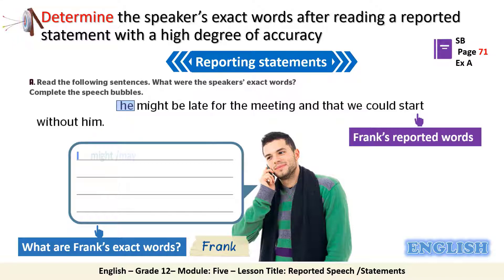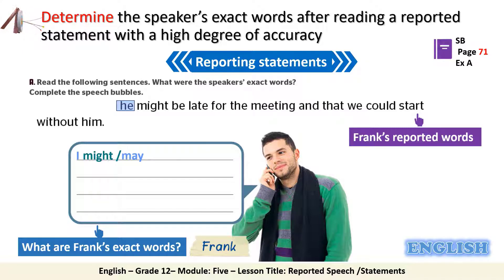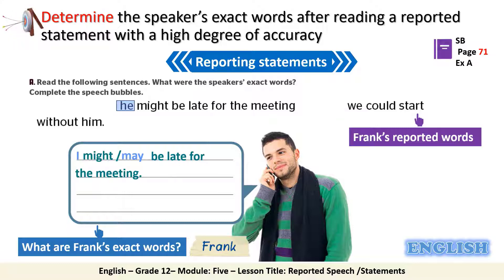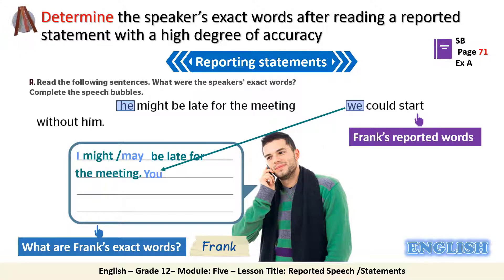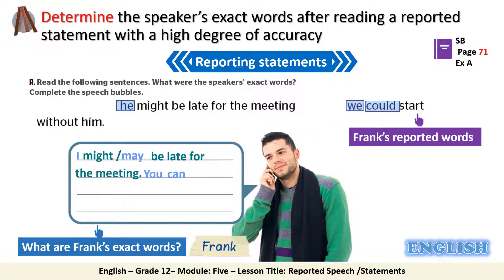'Might' can be changed to 'may' or kept unchanged. Then 'late for the meeting' with no changes. Then we remove 'and that' and replace it with a full stop. After that 'you' changes to 'you,' 'could' to 'can,' and then 'me' instead of 'him.'